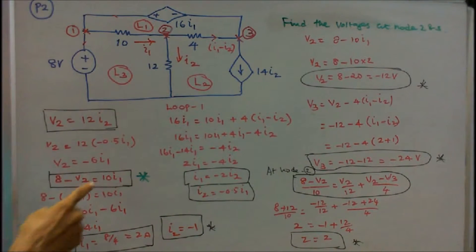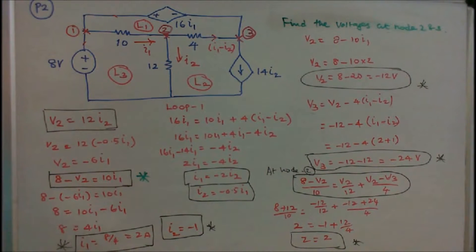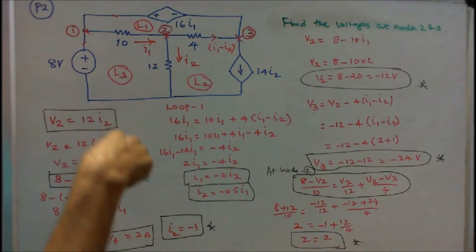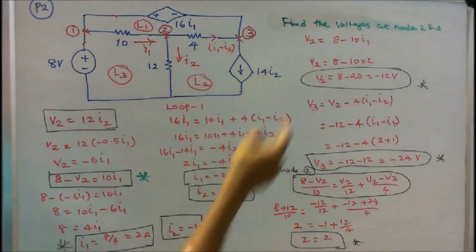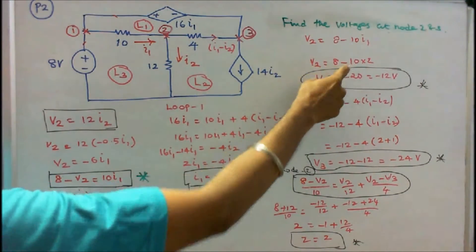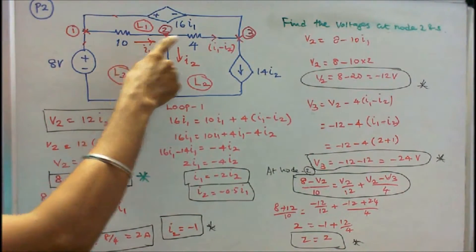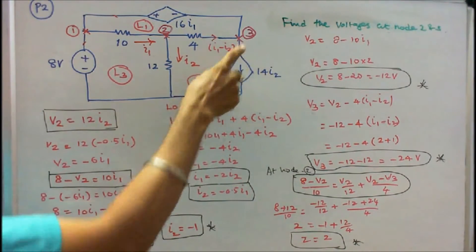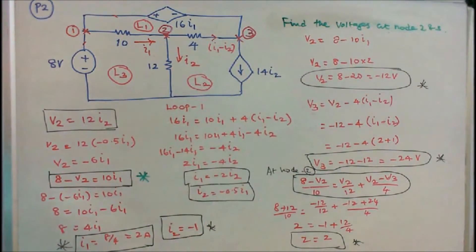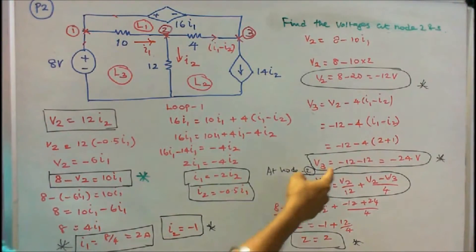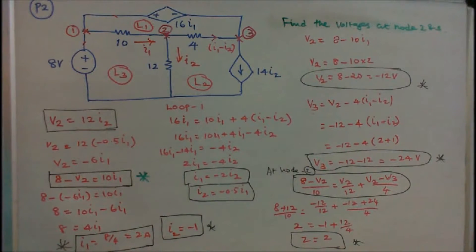Similarly, 8 minus V2 is equal to 10 into I1. Substituting V2 equal to minus 6I1, therefore 8 is equal to 4 into I1, so I1 is equal to 8 by 4, that is equal to 2 amps. I2 is equal to minus 0.5 into 2, that is equal to minus 1. So V2 is equal to 8 minus 10 into 2, that is 8 minus 20, equal to minus 12 volts. V3 is equal to V2 minus 4 into (I1 minus I2), therefore V3 is equal to minus 12 minus 4 into 3, so V3 is equal to minus 24 volts.